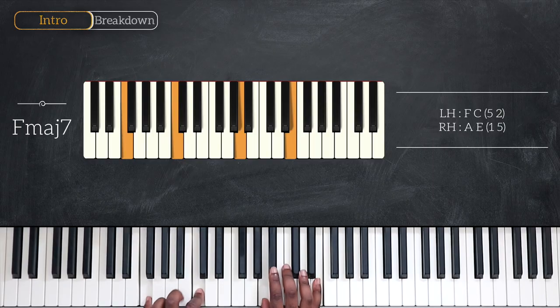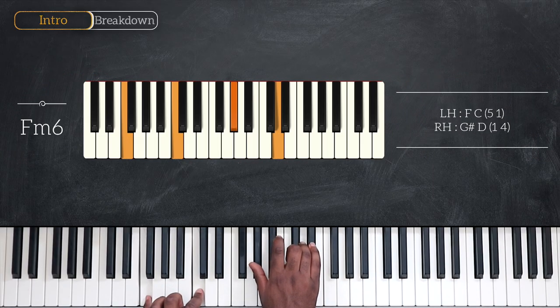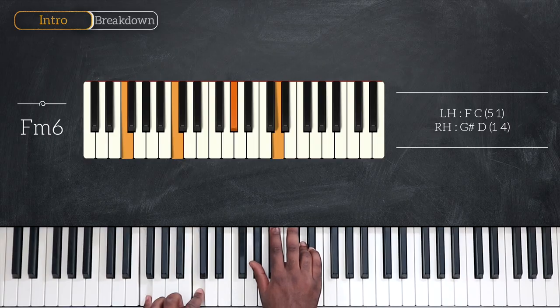Still playing over F, we have F minor 6. After that, A♭ and D on the right hand.